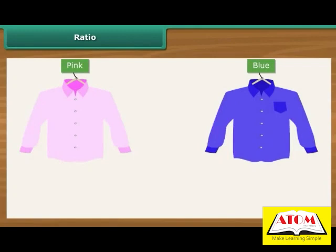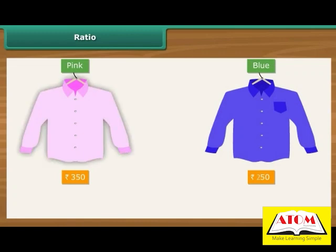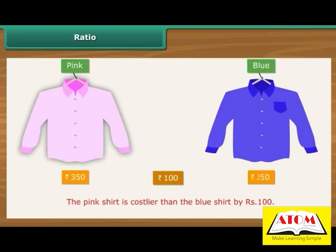Similarly, suppose Ritu buys two shirts, one pink and the other blue, costing Rs. 350 and Rs. 250 respectively. We say that the pink shirt is costlier than the blue one by Rs. 100. However, comparison by difference does not make sense when we compare quantities and values that are wide apart.